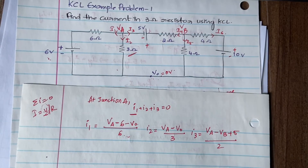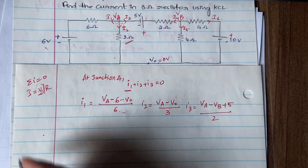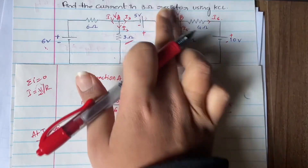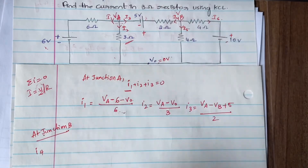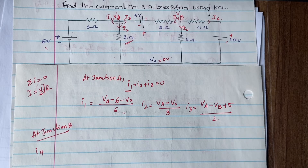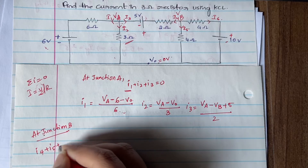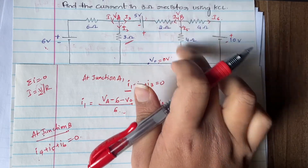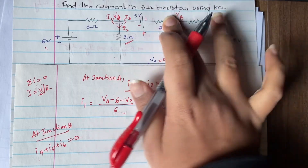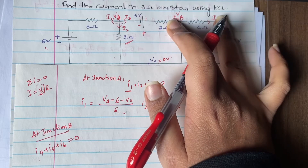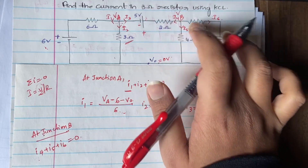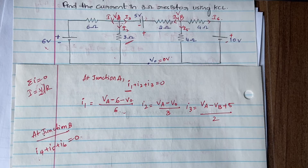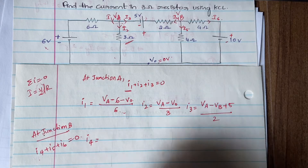Now form the KCL equation at Junction B. The currents there are i4, i5, and i6, all assumed in the outgoing direction. So i4 + i5 + i6 = 0. If any current were going inward instead, you would take it as negative and the others as positive — but since all are assumed outgoing, you take them all positive.